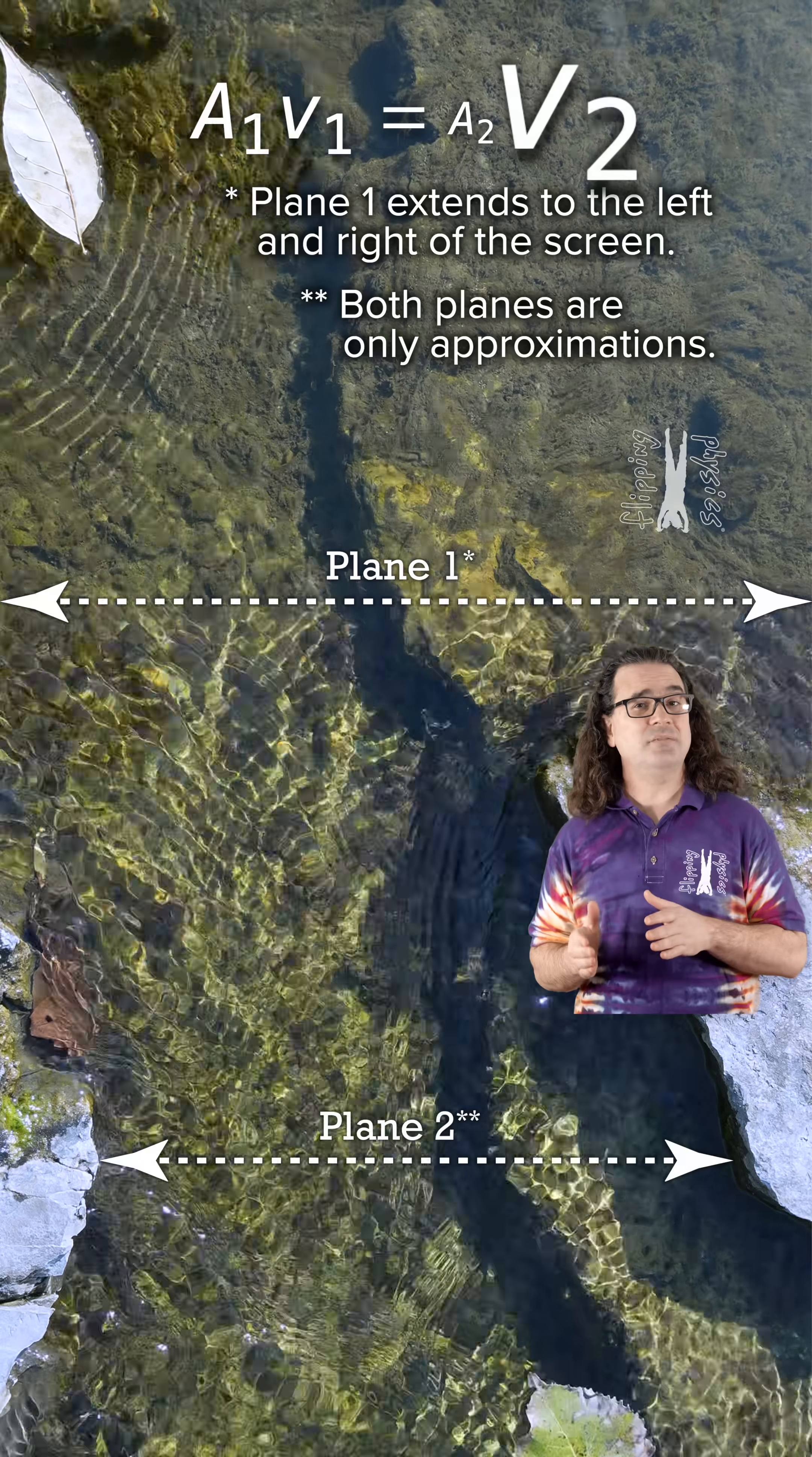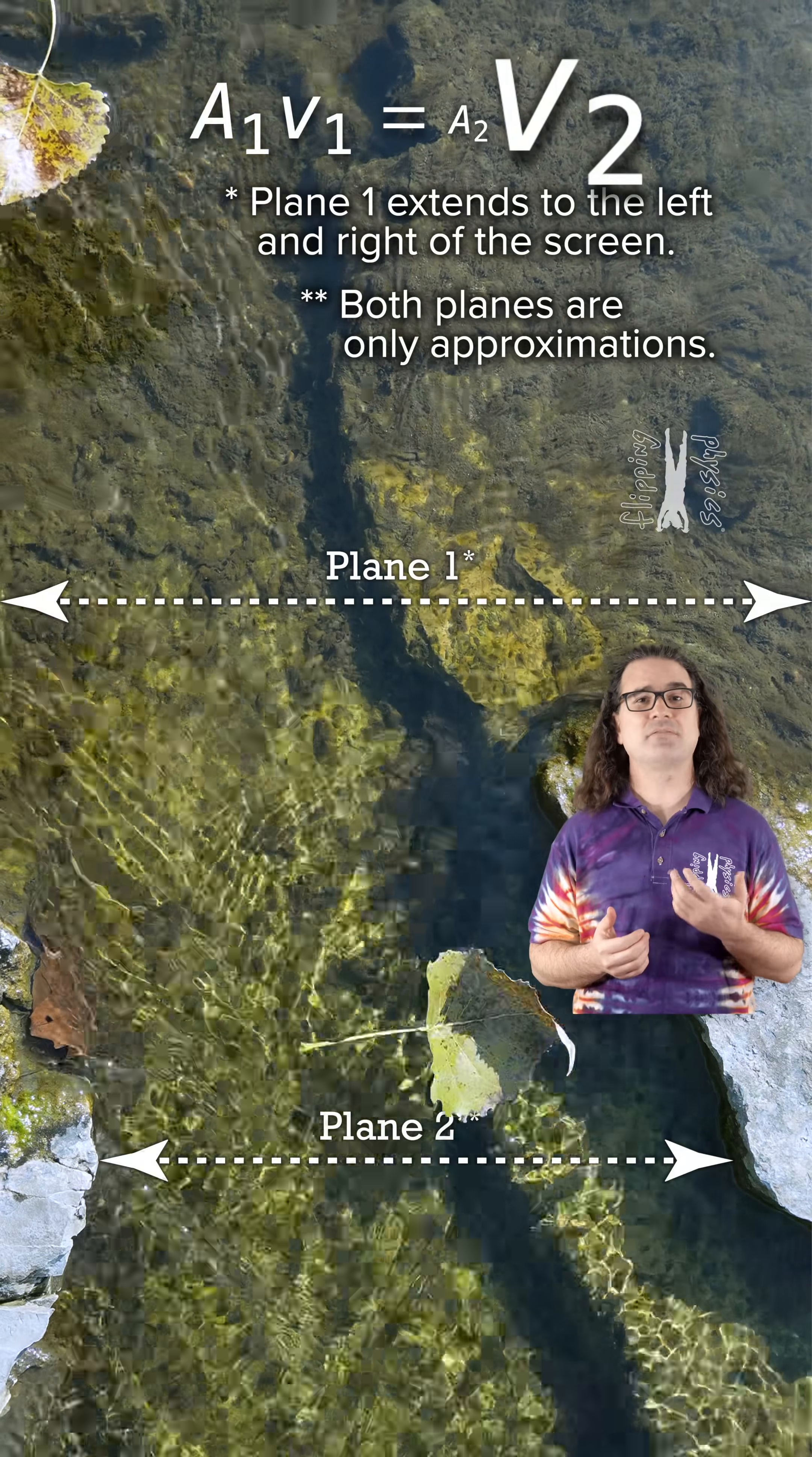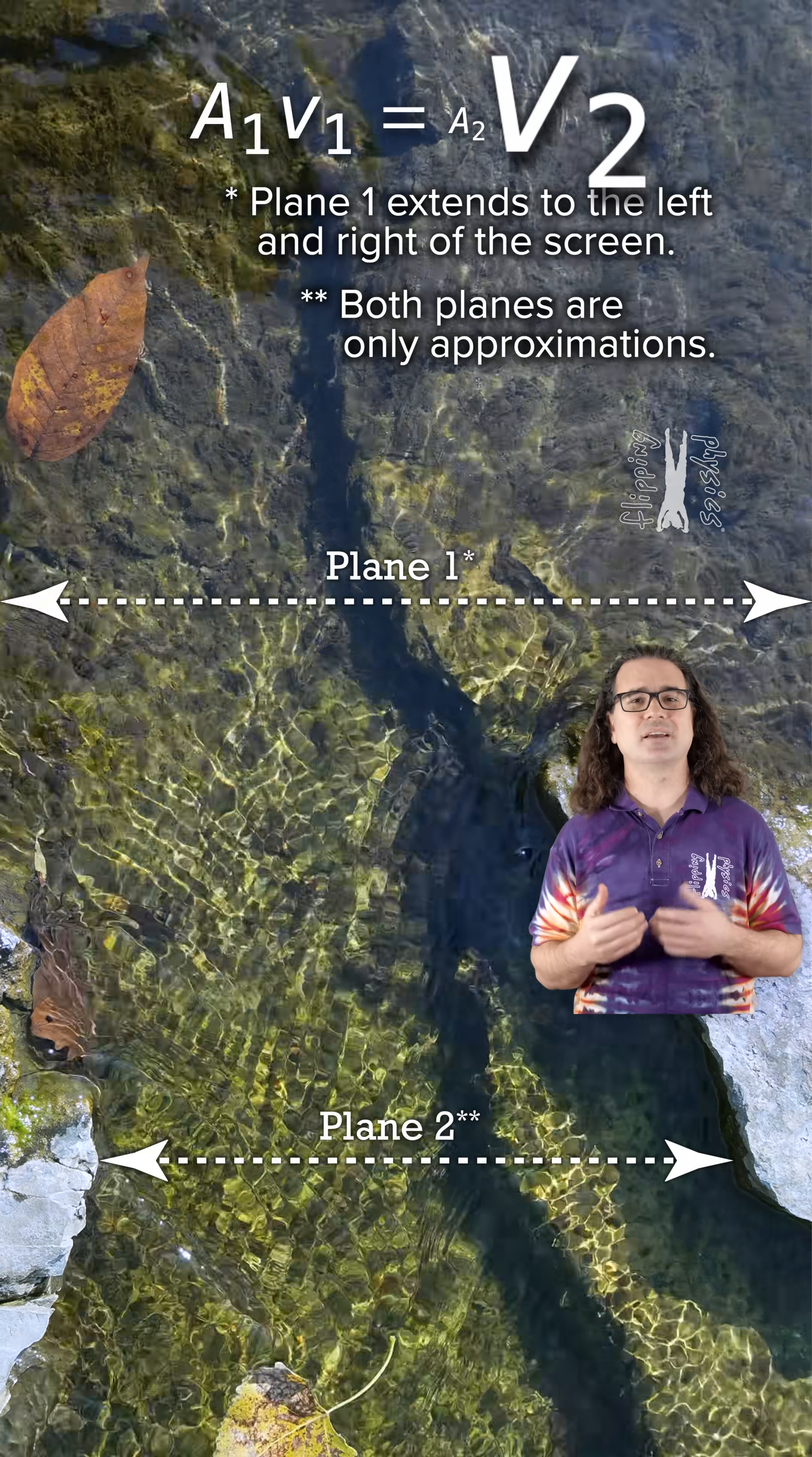You can see the leaves increase their speed as they enter the channel. The leaves show the speed of the flowing water increases as the cross-sectional area decreases.